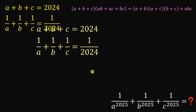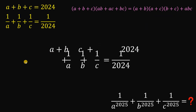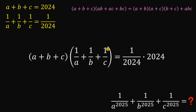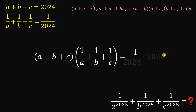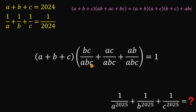To do that, let's take the two given equations and multiply them. The reason we do this is to apply the identity. So we have A plus B plus C, multiplied by 1 over A plus 1 over B plus 1 over C, equals 1 over 2024 times 2024, which simply equals 1. Now we need to combine 1 over A plus 1 over B plus 1 over C by finding a common denominator: BC over ABC plus AC over ABC plus AB over ABC.